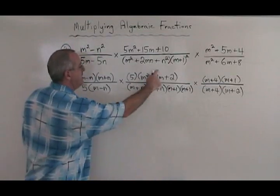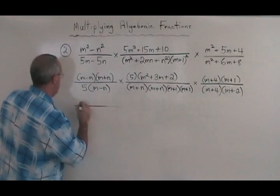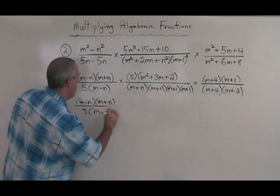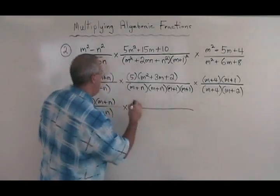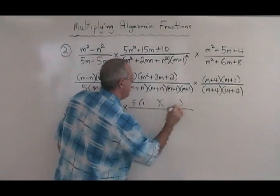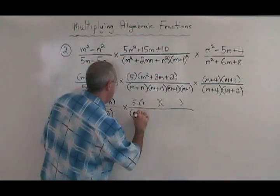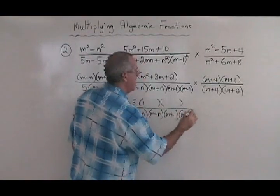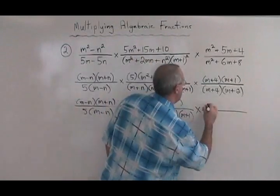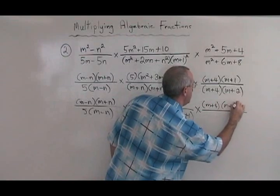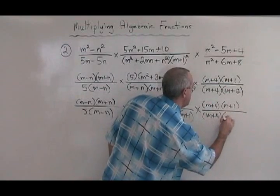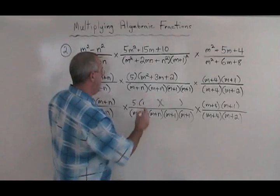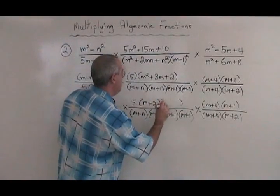Now I have to factor this trinomial. That means I have a lot of copying to do: m minus n, m plus n, 5, m minus n times 5. I'll leave brackets for this. m plus n, m plus n, m plus 1, m plus 1 times m plus 4, m plus 4, m plus 2. My two numbers multiply to give 2 and add to give 3. They are 2 and 1: m plus 2, m plus 1.